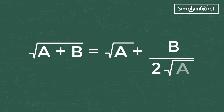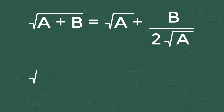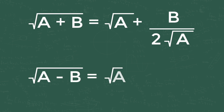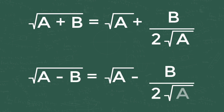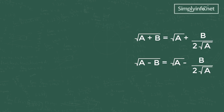Root of (a − b) is equal to root a minus b divided by 2 root a. Now we know the formula — let's see how we are going to apply it to our problem.